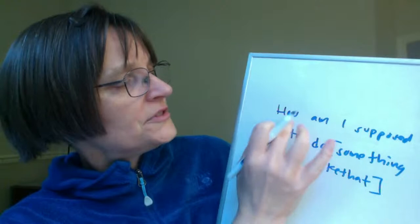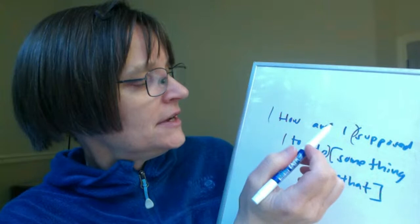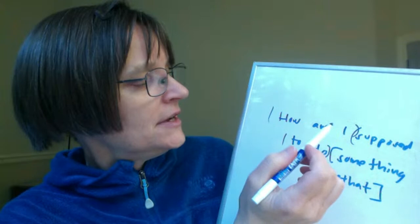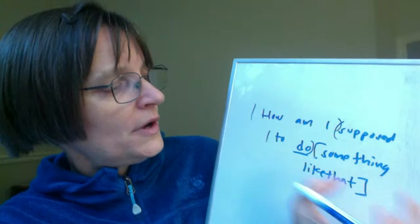The rule still applies. So separating it out as thought groups: 'How am I' — 'supposed to do' — 'something like that?' This is basically like three different chunks in the sentence. In this phrase I would stress 'do': 'How am I supposed to DO something like that?' Because 'something like that' is all one chunk of information.